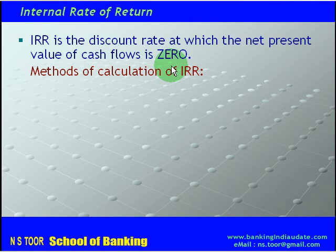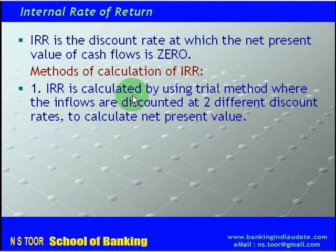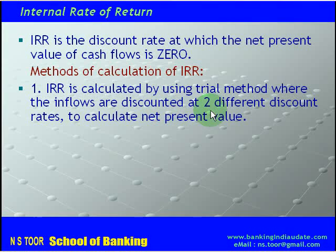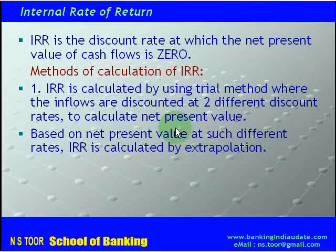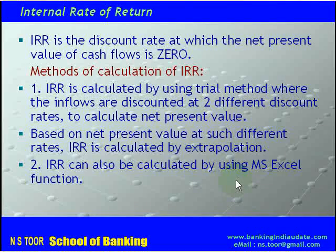How do we calculate IRR? IRR can be calculated manually or by using an MS Excel function. If calculated manually, we make use of the trial method. In this method, inflows from the project are discounted at two different discount rates, on the basis of which we calculate net present value at two different discount rates, and then IRR is calculated by extrapolation. The second method is to calculate IRR using the MS Excel function. In this lecture, we are going to calculate IRR by using both methods.